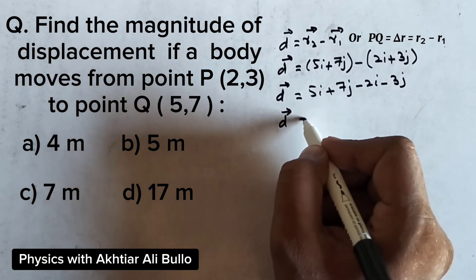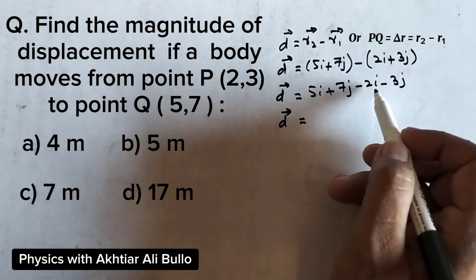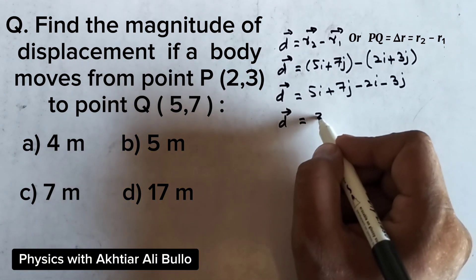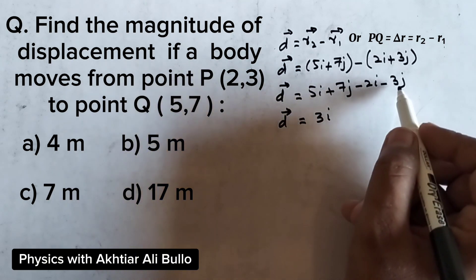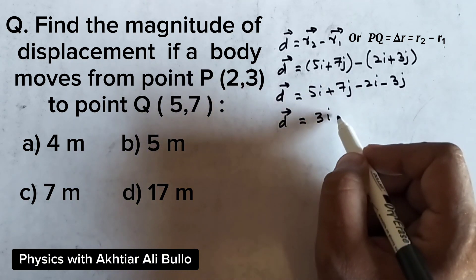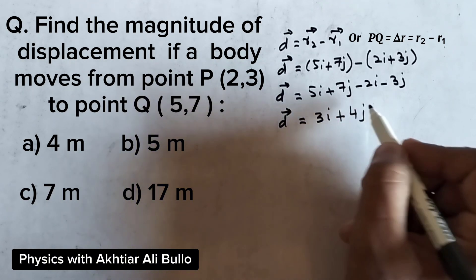Displacement vector will be obtained as 5i minus 2i equals 3i, plus 7j minus 3j equals 4j.